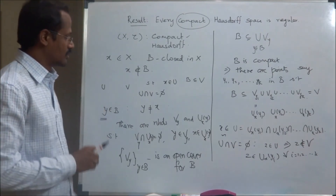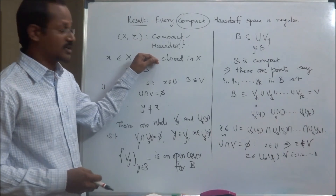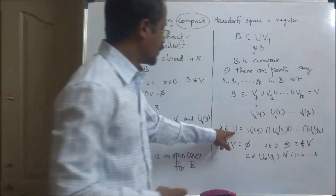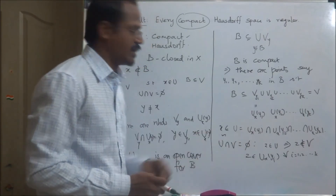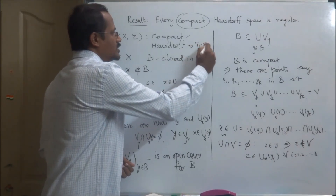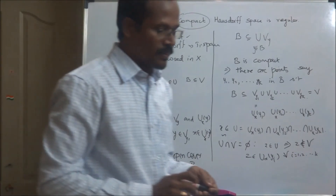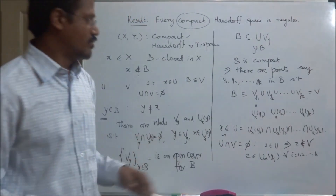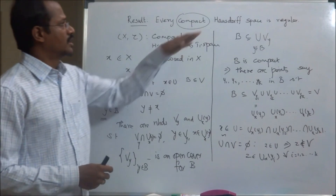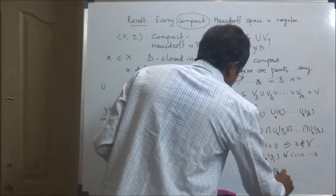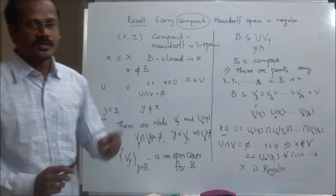Thus, we have proved that for a point x in X and a closed set B in X not containing x, there are disjoint open neighborhoods U containing x and V containing B such that U ∩ V is empty. Since X is a Hausdorff space it is a T1 space, meaning every singleton set is closed. We have established that a point x and a closed set B not containing x can be separated by means of disjoint open sets, which proves that X is a regular space. Therefore, the space X is regular, which completes the proof. I hope you understand this result. Thank you.